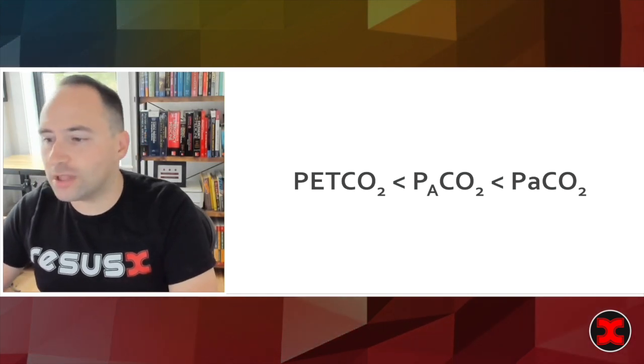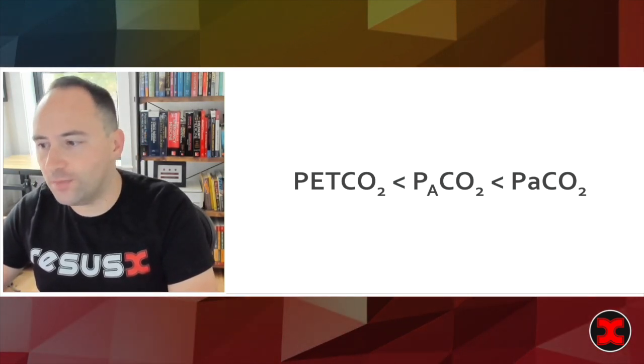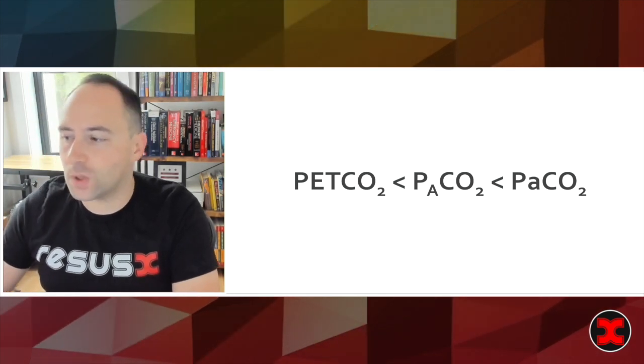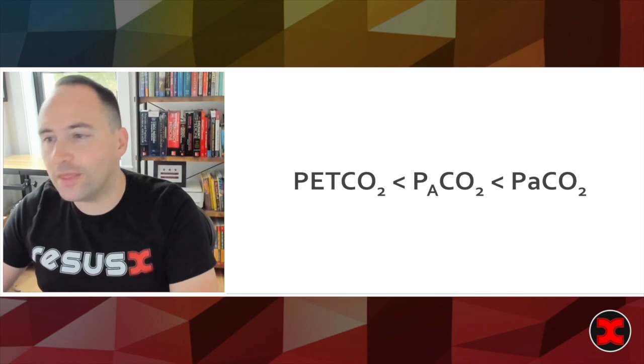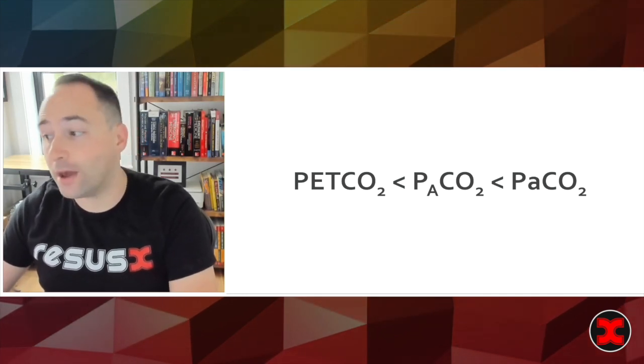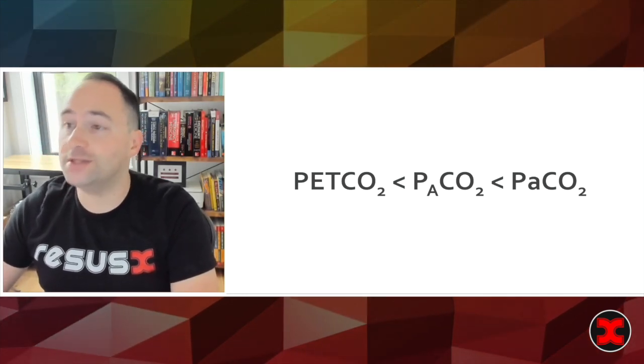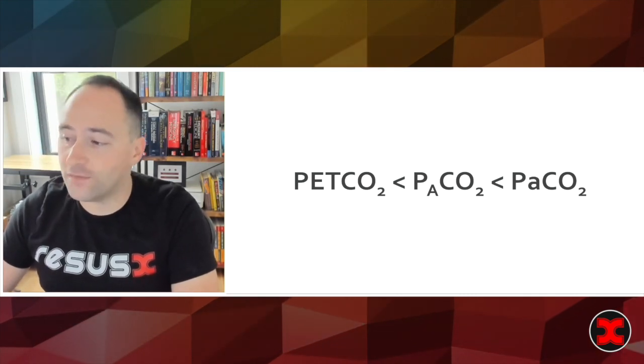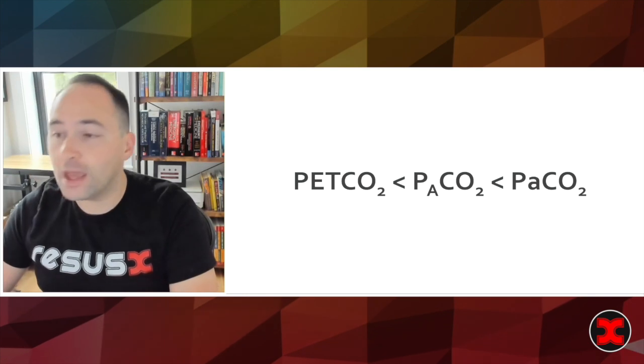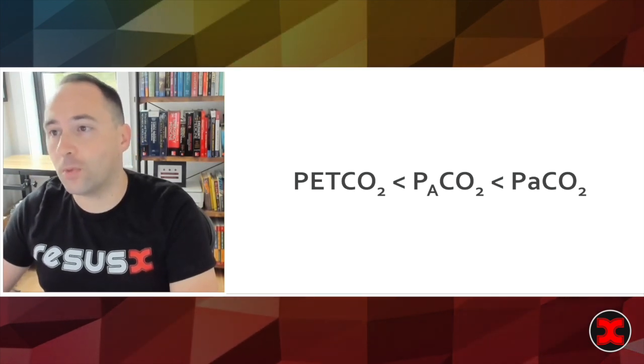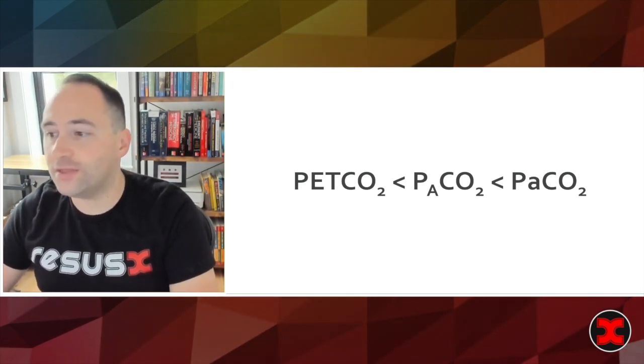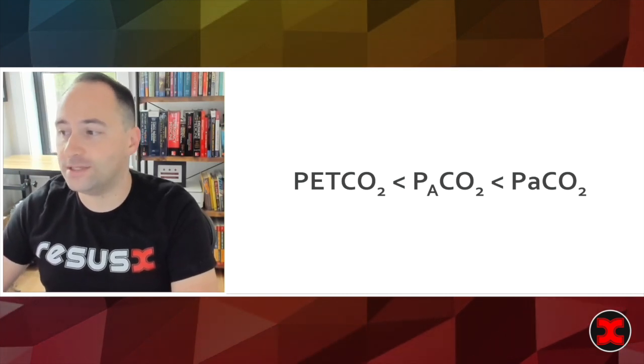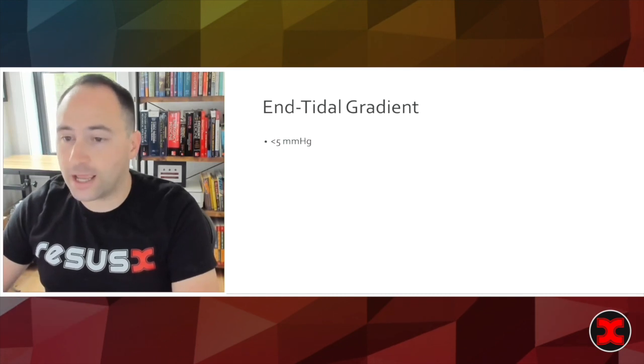This also lends to another fact about VQ matching and it's important to note that not all of the respiratory tree has the same amount of Q. That is to say not all of the respiratory tree has the same amount of blood flow. The consequence to this is dead space. If you think about the numerical gap between the end tidal value and the PCO2 value it's approximately proportional to dead space which is to say that your end tidal value will be less than your arterial value which will be less than your PaCO2 that you may get on your blood gas.